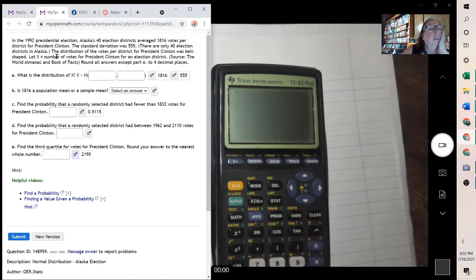When you're solving the problem, the first thing it asks is the distribution, and they want the mean and the standard deviation. We're given an average of 1816 and a standard deviation of 555. So that's our mean and our standard deviation.